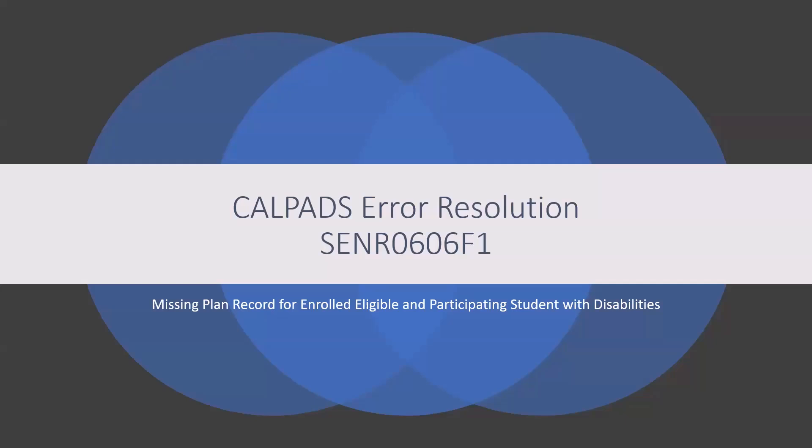CalPADS Error Resolution - SENR 0606F1: Missing Plan for Enrolled, Eligible, and Participating Students with Disabilities.